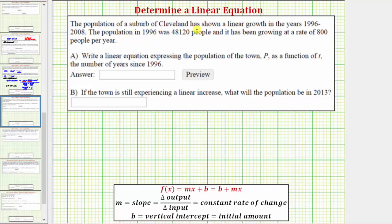The population of a suburb of Cleveland has shown a linear growth in the years 1996 to 2008. The population in 1996 was 48,120 people, and it has been growing at a rate of 800 people per year.